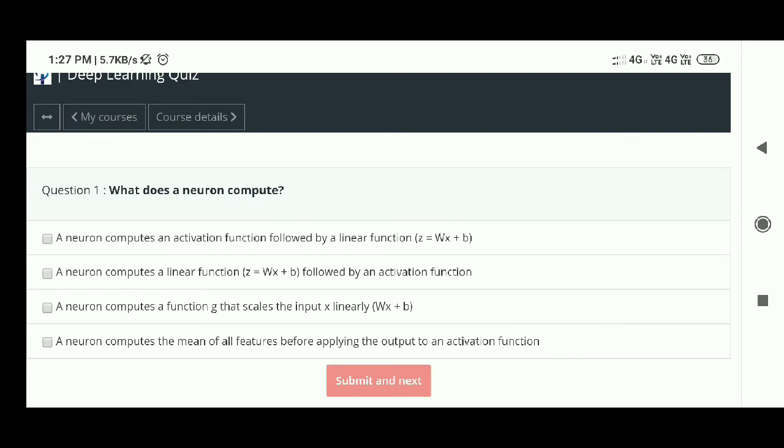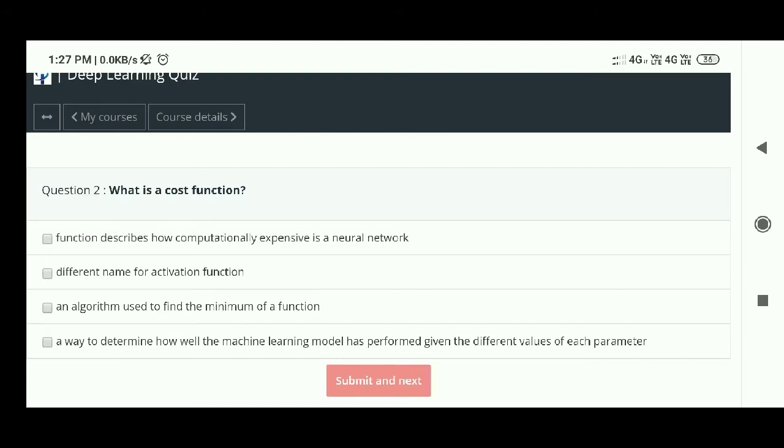Submit and click next. Second question: What is a cost function? The answer is - a way to determine how well the machine learning model has performed given the different values of each parameter.